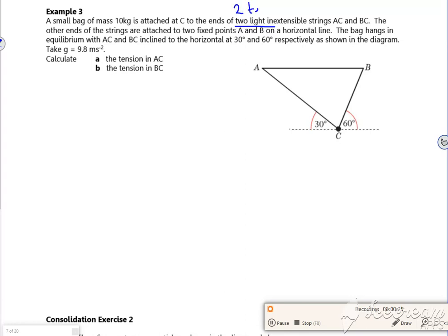So two strings, two tensions, there. The other ends of the strings are attached to points A and B on a horizontal line. The bag hangs in equilibrium, inclined at 30 and 60 degrees respectively.